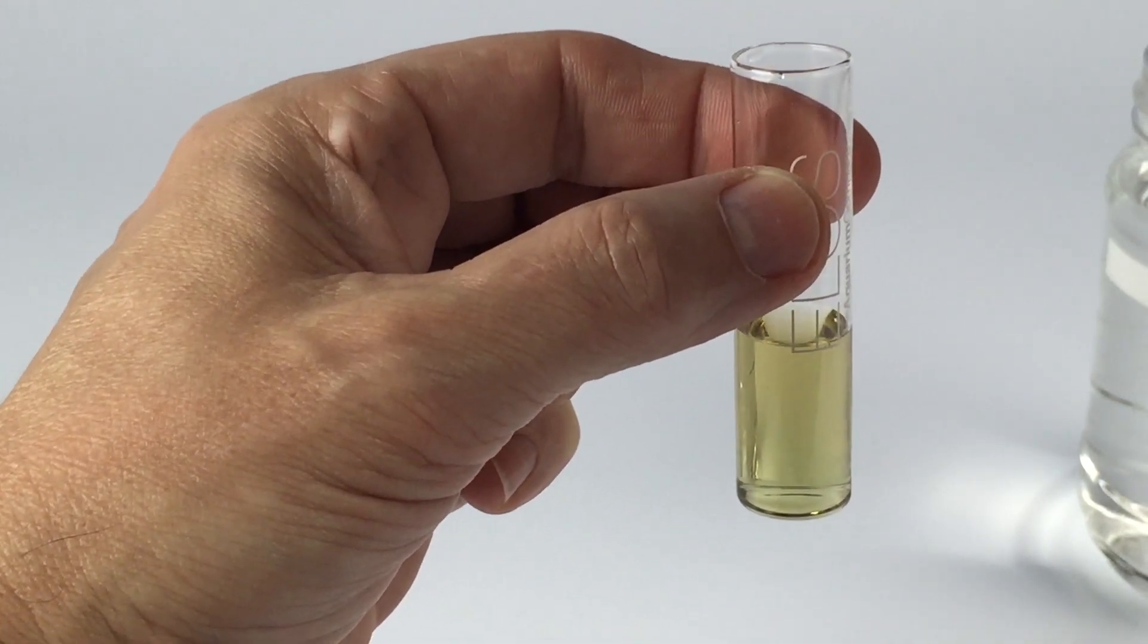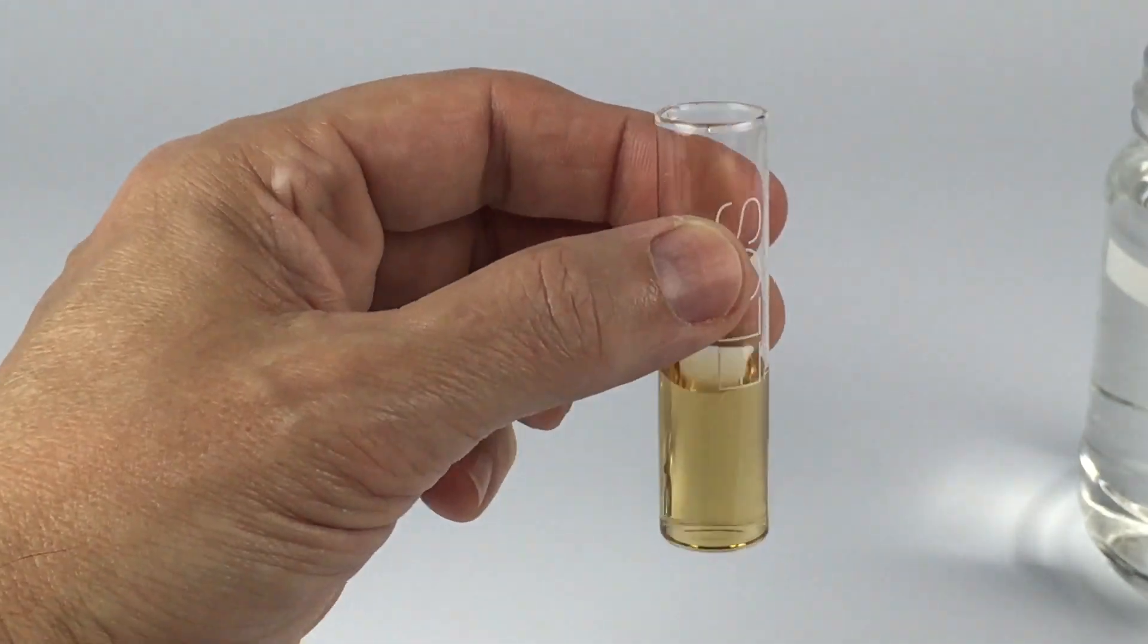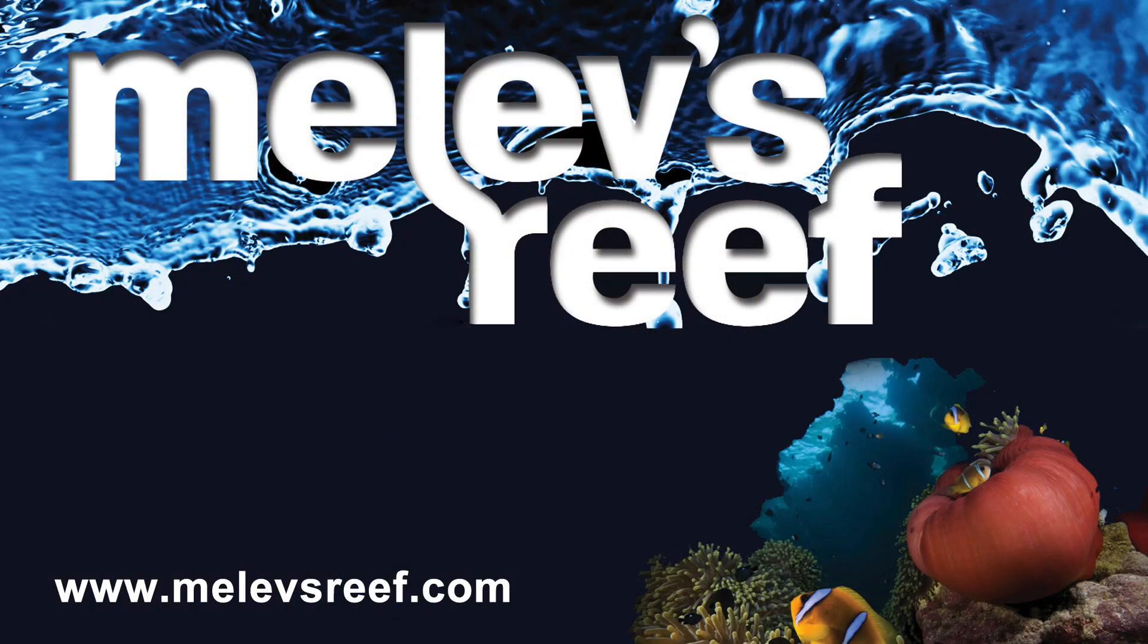Alkalinity is one test kit you cannot measure too often. You could do it daily, you should absolutely do it weekly. And once done always rinse out your vial with RO water and set it aside until next time.